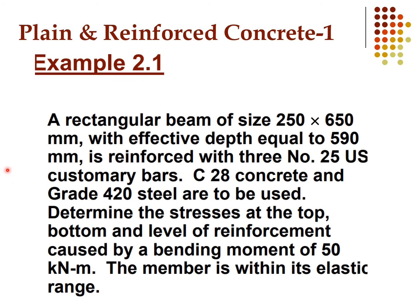Example 2.1: A rectangular beam of size 250 × 650 mm with effective depth equal to 590 mm is reinforced with 3 No. 25 US customary bars. C28 concrete and Grade 420 steel are to be used. Determine the stresses at the top, bottom, and level of reinforcement caused by a bending moment of 50 kN·m. The member is within its elastic range.